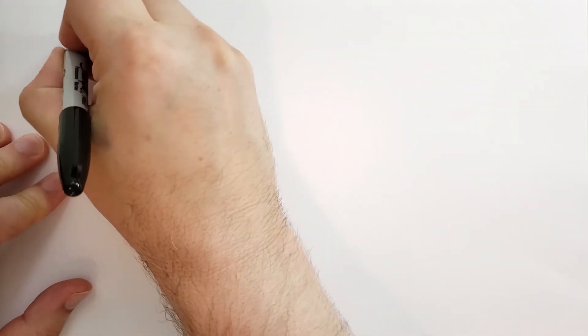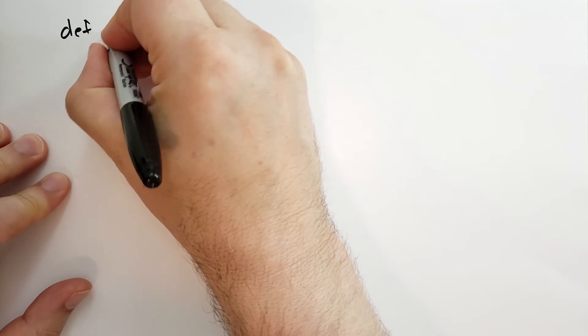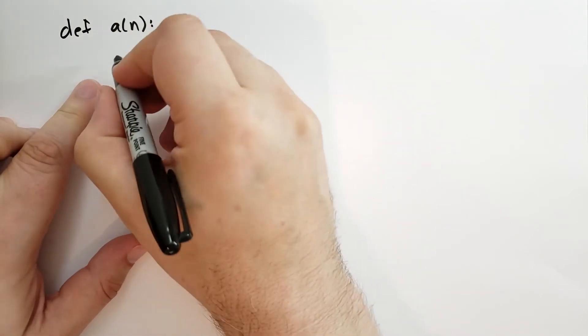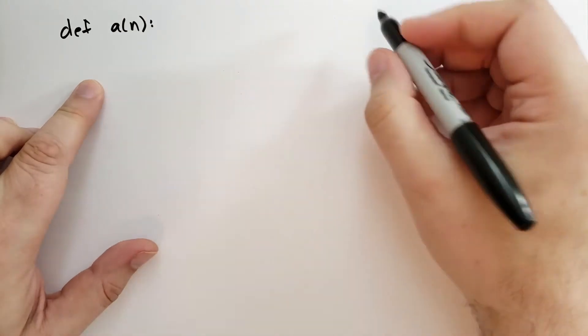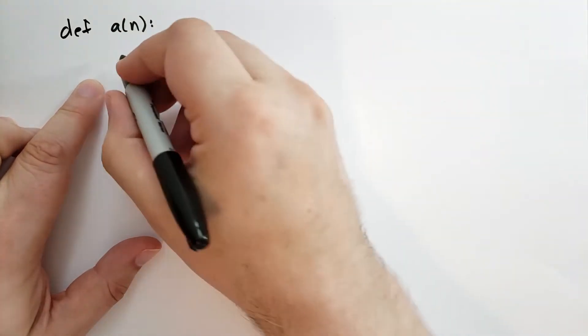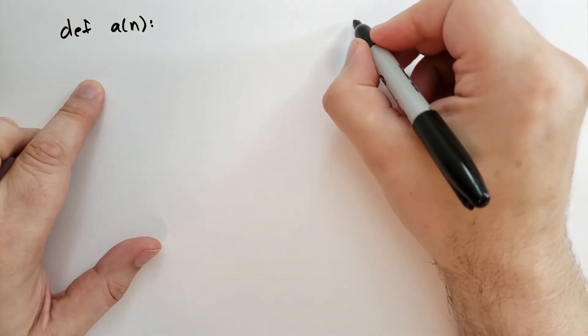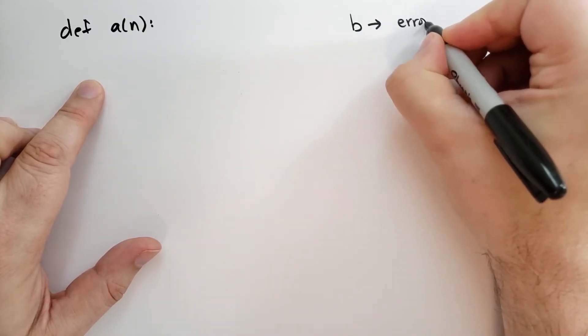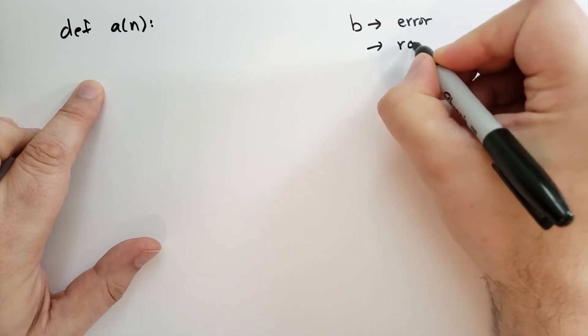Suppose we didn't have exceptions in our programming language. How could we implement similar behavior? Well, let's write out a. This is going to call and return a value, but we really don't know what to do. So let's think about this. So when a calls another function, let's suppose a calls b. b could return some kind of error, or it could return some normal value.